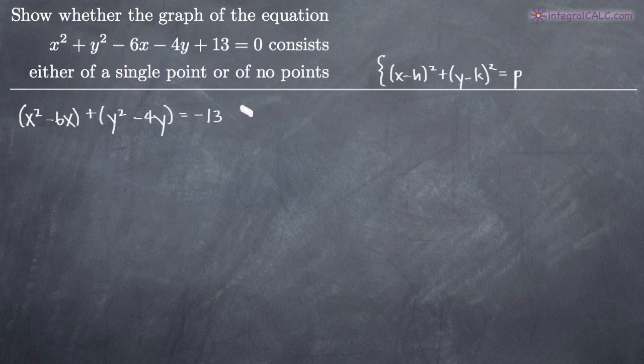And again, we're trying to get this into this format over here. So you can see x terms together, y terms together, and then p consists of just a constant value. So like I said, complete the square.